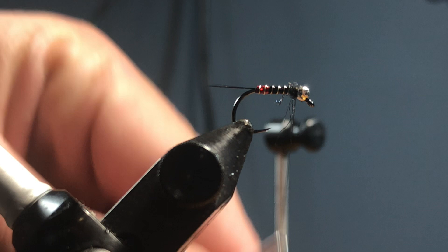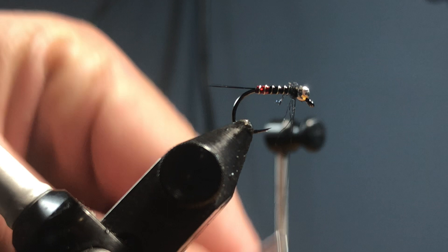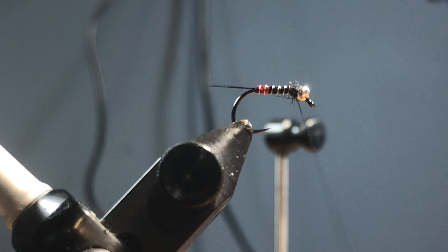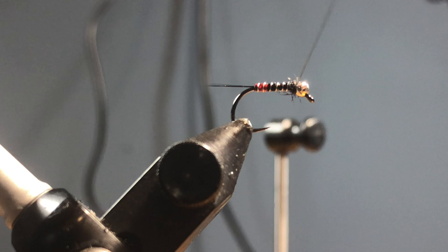So once we're there you can either hit it with super glue, I'm not. We're gonna come in and whip finish and that should do us. We should be done with the old French jig. Little four-turn whip finish, pull back, come back in here again. Come on now.